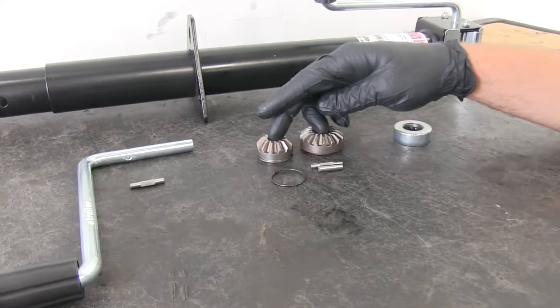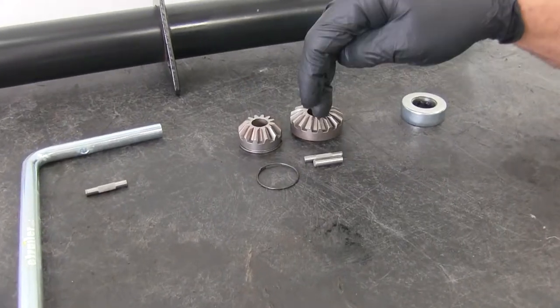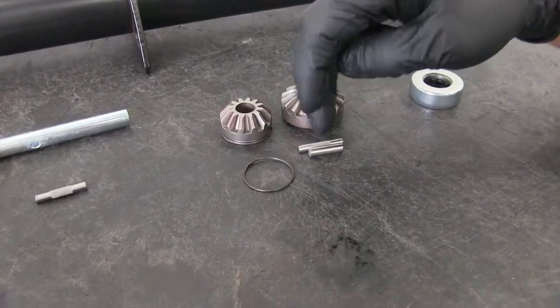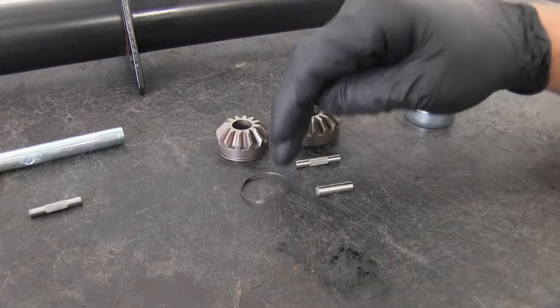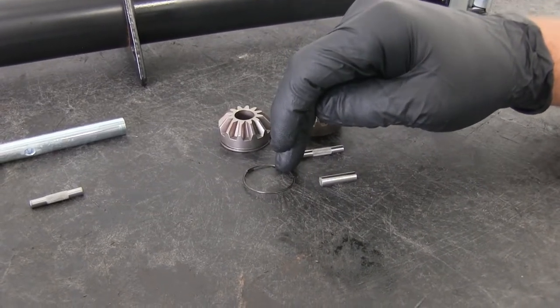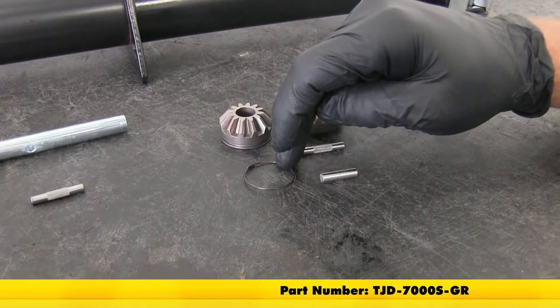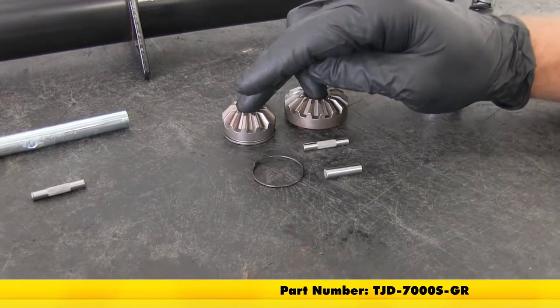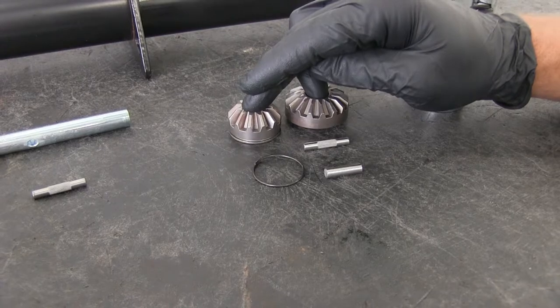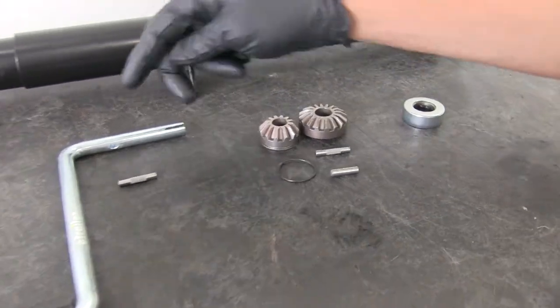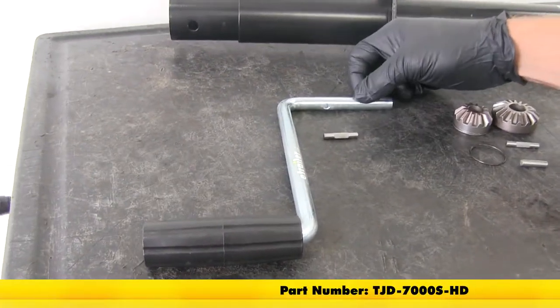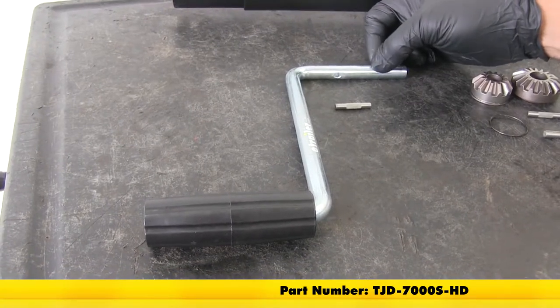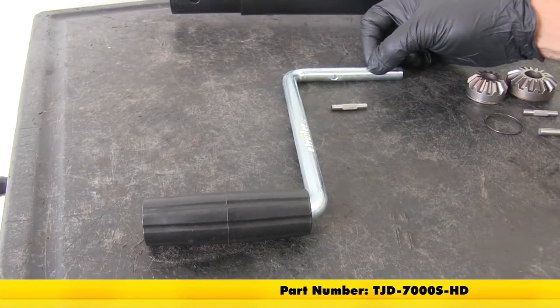Next we're going to have the gear kit. Now we have the bottom gear, the handle pin, the base gear pin, and the keeper ring. These are part numbers TJD-7000-S-GR. And then if you just need to do a handle replacement we also have that available. This is TJD-7000-S-HD.